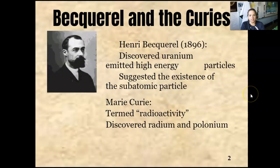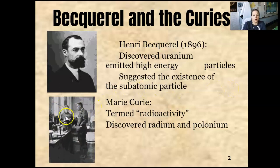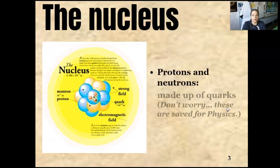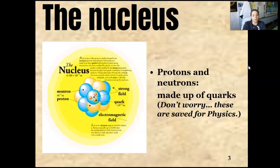Becquerel, another scientist, and the Curies discovered uranium and they discovered that it emitted high energy particles, which suggested the existence of subatomic particles. This is one of their proofs. Marie Curie, awesome lady, she termed the word radioactivity and she is the one who discovered radium and polonium, her and her husband. In the nucleus, we found through Rutherford's experiment that there was a dense nuclear charge in the middle, a dense nucleus in the middle of an atom.